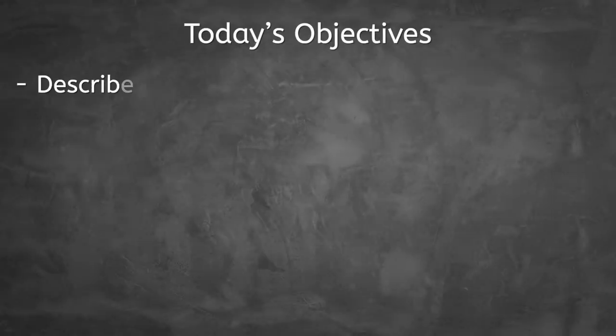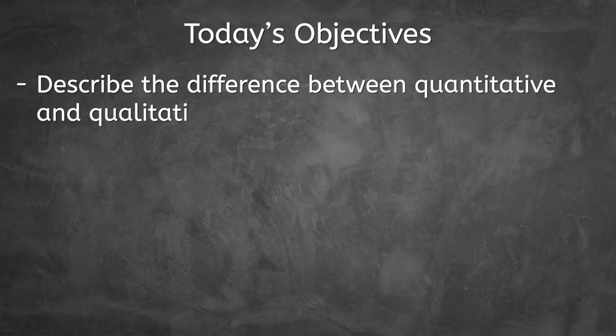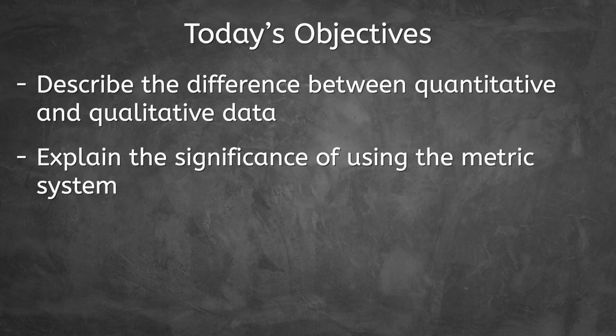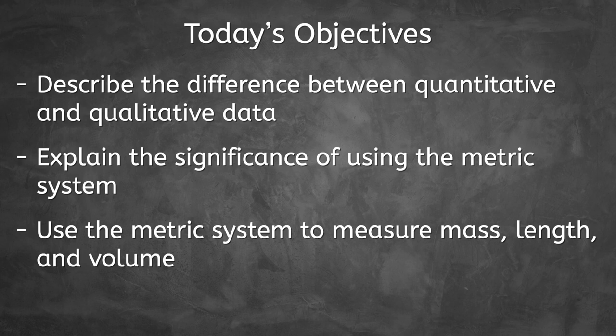I wish there was some system that made converting between different units of measurement so much easier. Oh wait, there is! It's called the metric system and biologists all over the world use it to measure all kinds of data. Today we're going to be exploring the metric system as we describe the difference between quantitative and qualitative data, explain the significance of using the metric system, and use the metric system to measure mass, length, and volume. Let's get into it.